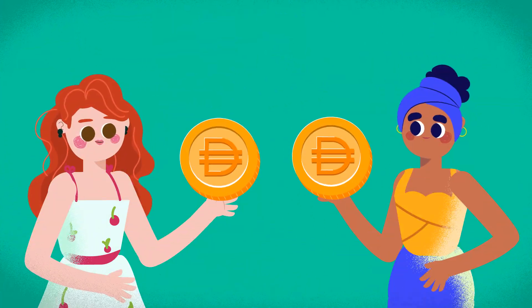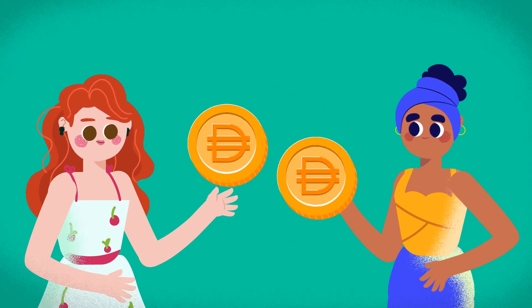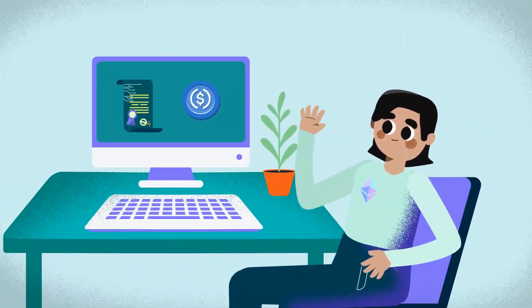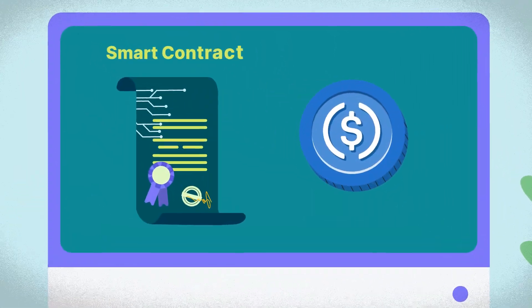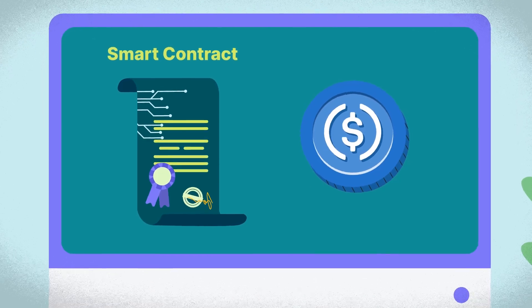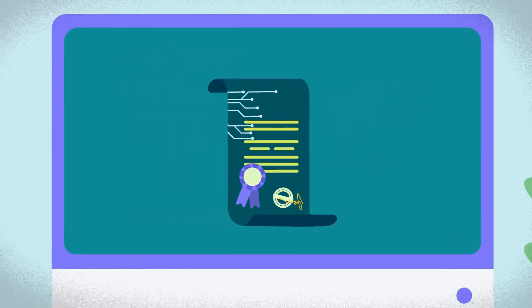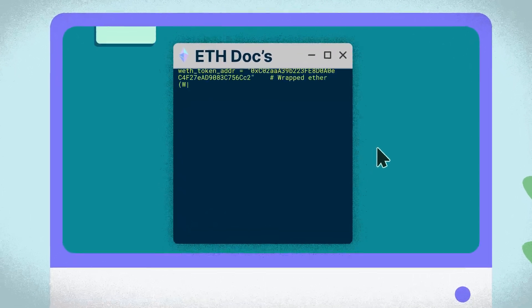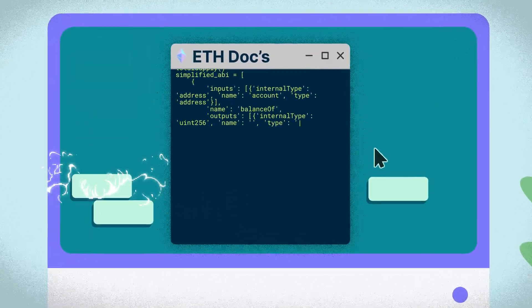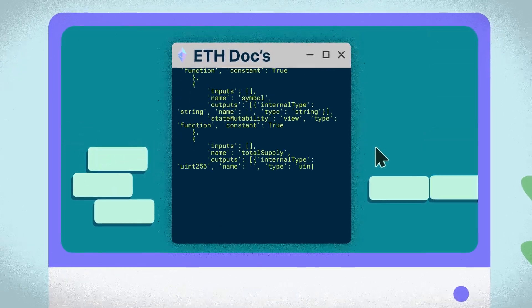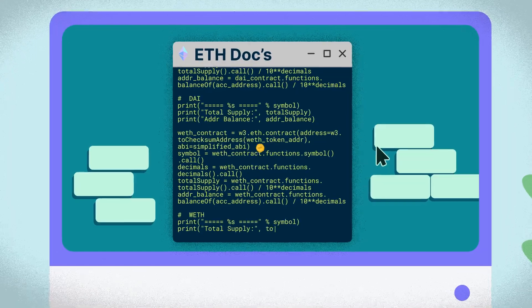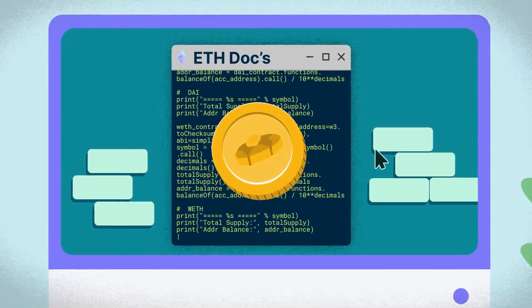It's a fungible standard, such that Kimberly's DAI token will always have the same exact value as Shirley's DAI. Also, Jake, an Ethereum developer, can code his smart contract assured with the knowledge that it can easily interact with ERC20 tokens. In any case that Jake wants to create his ERC20 token, he'll have to implement these functions listed on Ethereum's docs, to lay down the foundation for whatever type of cryptocurrency he wishes to create.